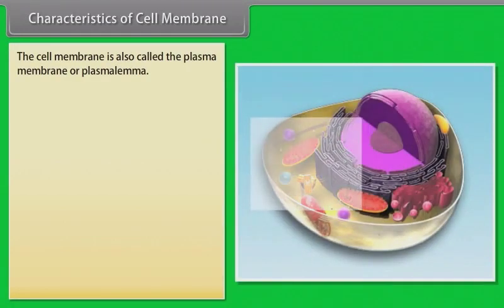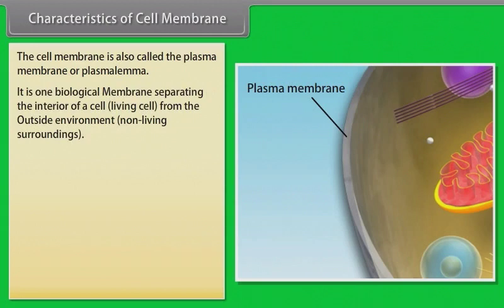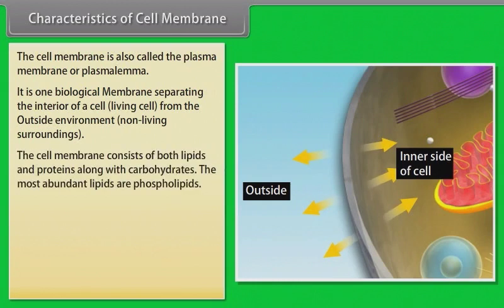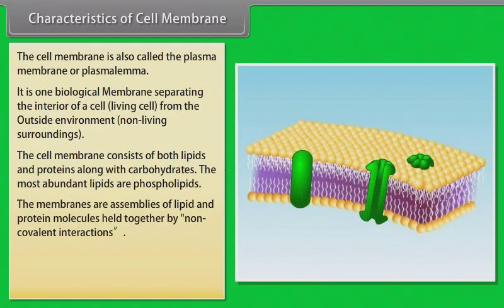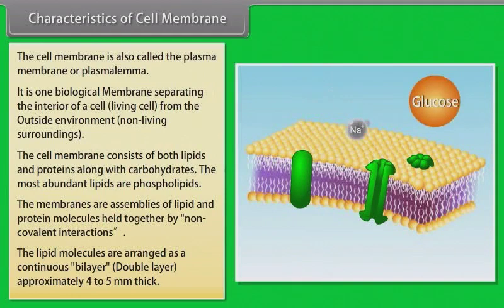Characteristics of cell membrane: The cell membrane is also called the plasma membrane or plasmalemma. It is a biological membrane separating the interior of a living cell from the outside non-living environment. The cell membrane consists of both lipids and proteins along with carbohydrates. The most abundant lipids are phospholipids. The membranes are assemblies of lipid and protein molecules held together by non-covalent interactions. The lipid molecules are arranged as a continuous bilayer, approximately 4 to 5 nm thick.